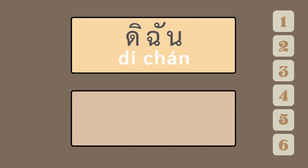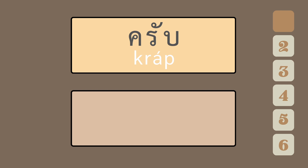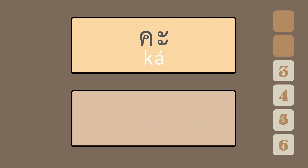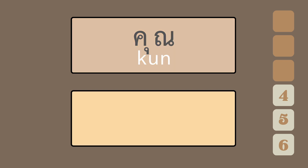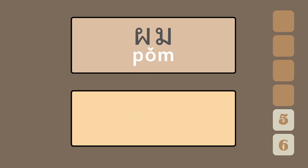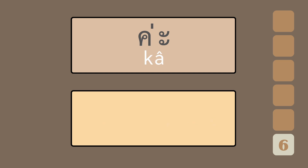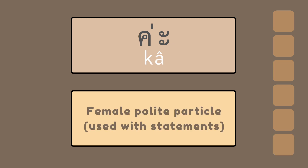Now, let's do the quiz. What is ดิฉัน? — I, for female speakers. What is ครับ? — Male polite particle. What is ค่ะ (questions)? — Female polite particle, used with questions. What is คุณ? — You. What is ผม? — I, for male speakers. What is ค่ะ (statements)? — Female polite particle, used with statements.